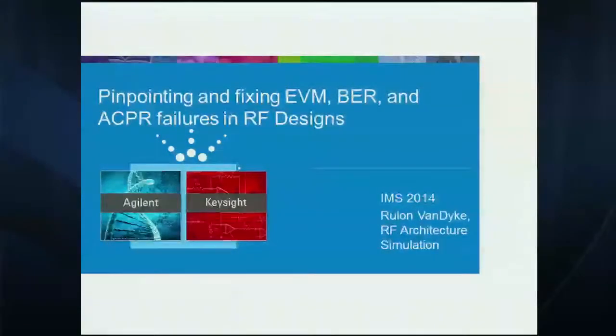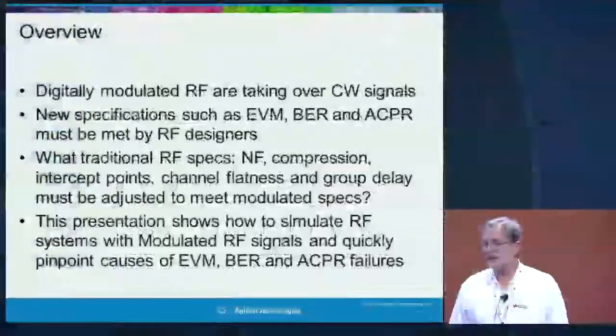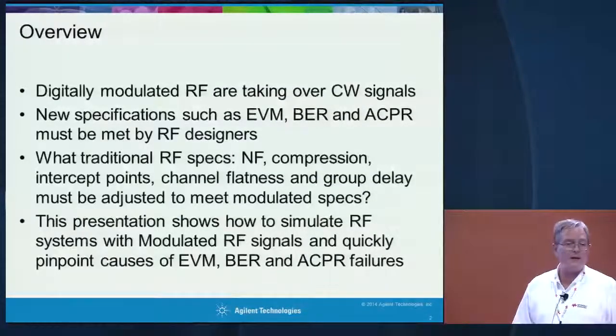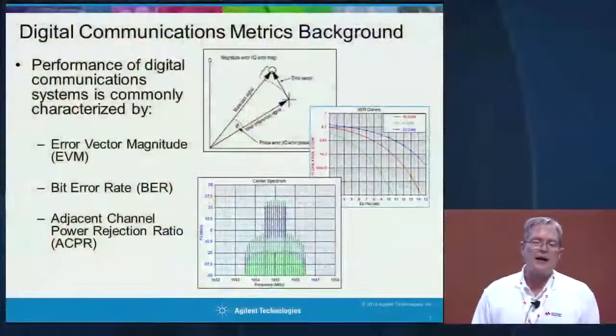Today we're going to talk about digital modulation and how those specifications and requirements translate down into RF specifications. Generally from the requirements come digital modulation specifications, but as RF designers we use cascaded noise figure, intermods, and so forth. I'm going to show you a first-in-the-industry technique where we can actually do EVM estimation and pinpoint where EVM errors, BER, and ACPR errors are. This slide gives a little background on EVM, ACPR, and adjacent channel rejection ratio.